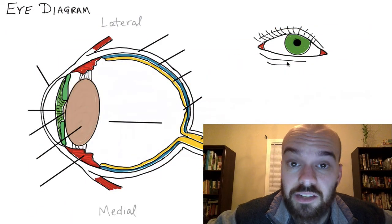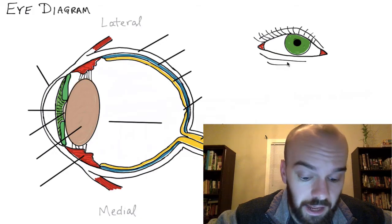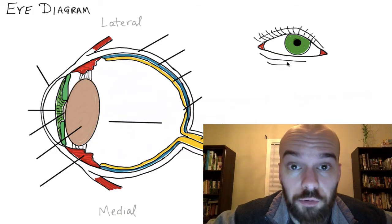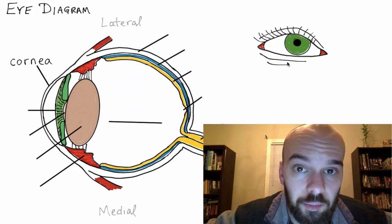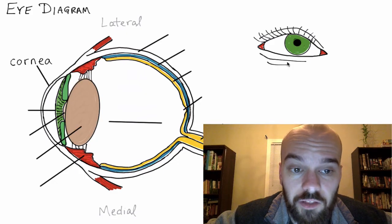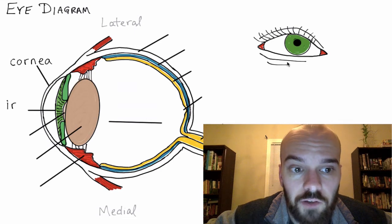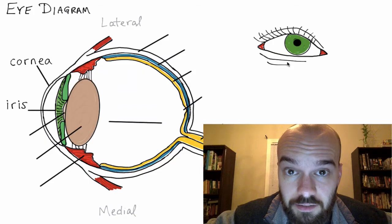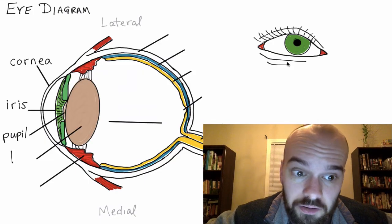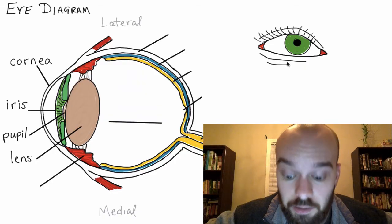Now, if you want to quiz yourself, you can stop the video and see if you can label all the different parts of the eye. First, we've got the cornea — that's the clear outer part of the eye that's in front of the pupil, lens, and iris. You've got the iris, that colored part of your eye that determines how much light gets in. You've got the pupil, which is a hole in the iris. You've got the lens, which will change shape to help focus light onto the retina.